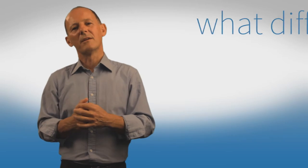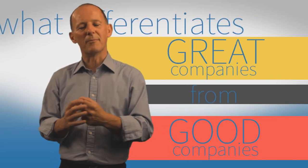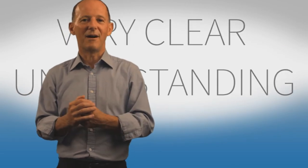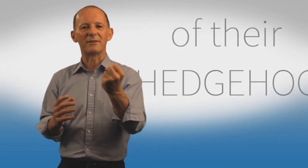Jim Collins in his book, Good to Great, took the idea and extended it. He said that amongst a number of things, one of the things that differentiated great companies from good companies was that great companies had a very, very clear understanding of their hedgehog, what differentiated them in the marketplace.